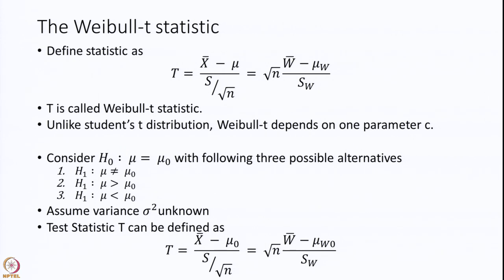Let us define the Weibull t statistic — that is, the t statistic we already know: x-bar minus mu divided by S over square root n — which can be written as square root n times (W-bar minus mu_W) divided by S_W. This I call t, but it would not follow the Student's t distribution. Whatever it may follow, I call it a Weibull t statistic. T is called a Weibull t statistic and, unlike the t distribution, the Weibull t statistic also depends on one unknown parameter C, which is the shape of the Weibull distribution.